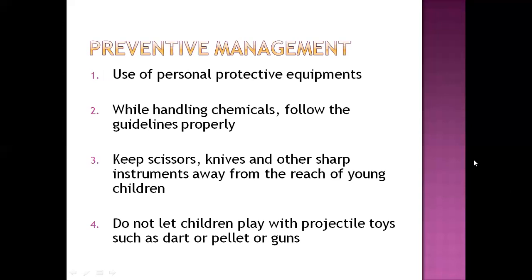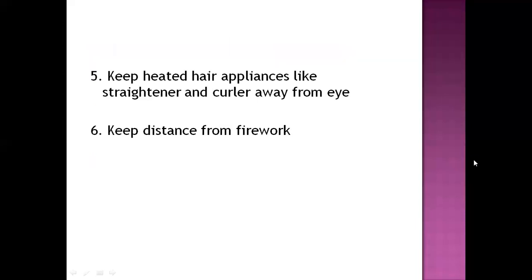There can be preventive management of emergency conditions — use personal protective equipment during occupational exposure, environmental pollutant exposure, or to protect eyes from ultraviolet waves. While handling chemicals, follow guidelines properly and use protective equipment. Keep scissors, knives, and other sharp instruments away from the reach of young children to prevent eye injuries. Do not let children play with projectile toys, as they can injure the eyes. Darts, pellets, or drones should not be given to children unable to handle them safely. Keep heated appliances like straighteners or clothes irons away from the eye. Keep distance from fireworks to protect your eyes.